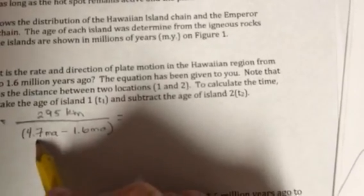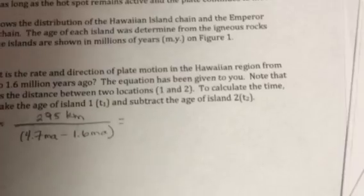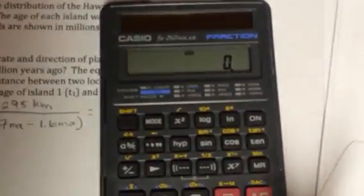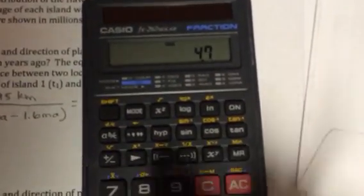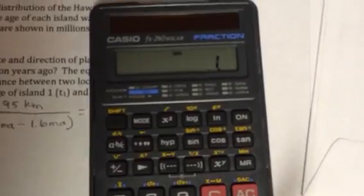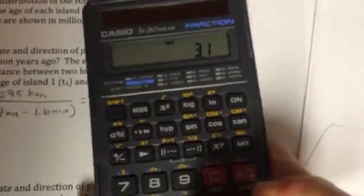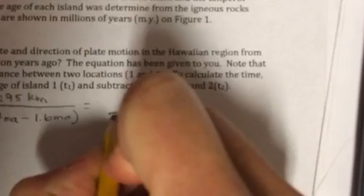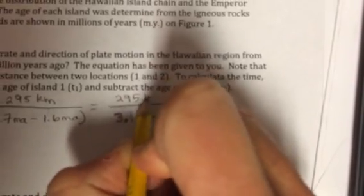You can use your calculator to do that if you need to. So our distance, we said, was 295 kilometers. Okay, so to do 4.7 minus 1.6, you can get your calculator out. 4.7 minus 1.6 is 3.1 million years, and the distance is 295 kilometers.